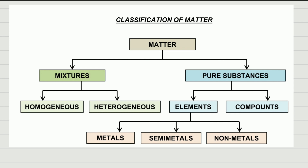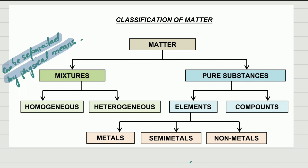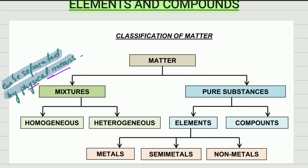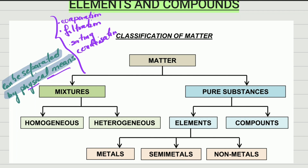Matter is divided into two main groups: mixtures and pure substances. Mixtures have the characteristic that they can be separated by physical means. What do we mean by physical means? We're talking about filtration, evaporation, sorting, and condensation. Those are the physical means we use. So that is the main thing about mixtures — mixtures can be separated by physical means.